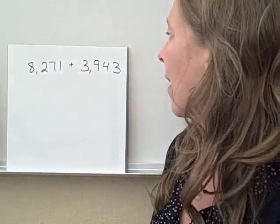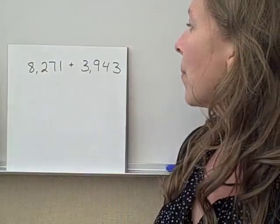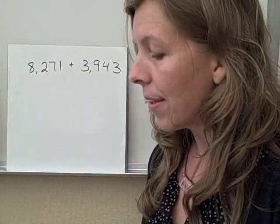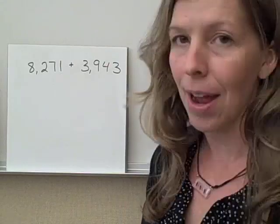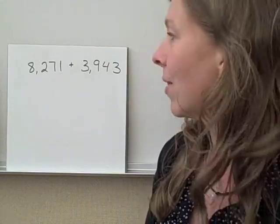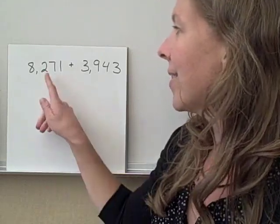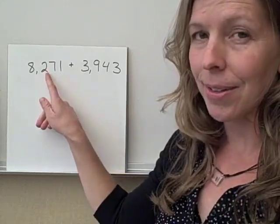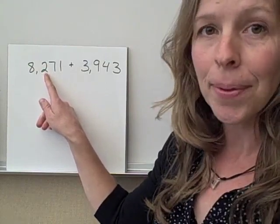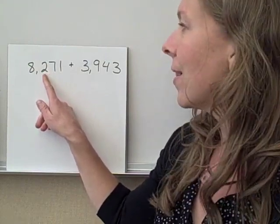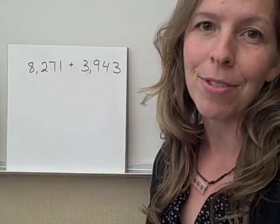So let's take this problem here. 8,271 plus 3,943. If we were to round this, round, right? Not front-end estimation. When I taught you how to round to the nearest thousand, I said that you'd have to look at the hundreds digit, the one to the right. If it's five or greater, you round up to the nearest thousand. If it's less than five, you round down, right?